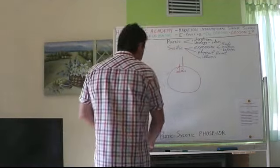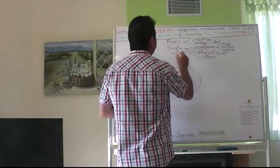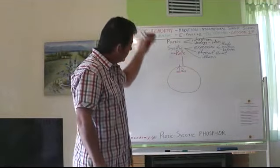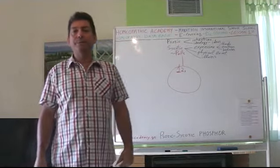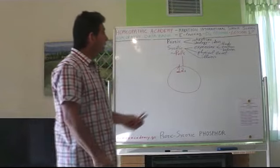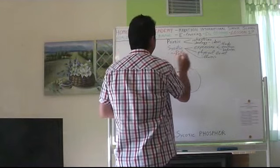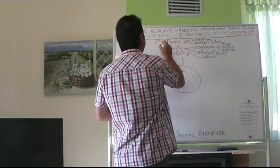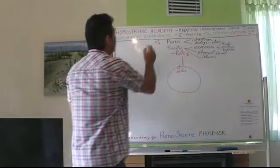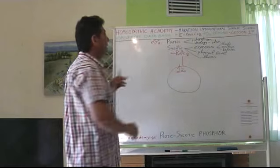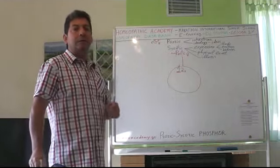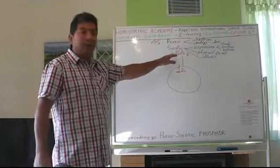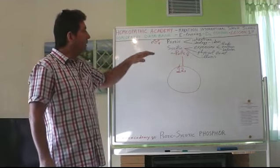Pulsatilla is also psoric in intention, ideology, and ideas, and psychotic in expression and physical level. Pulsatilla is mostly female — 95% may be female — and you will see that Pulsatilla suits the female characteristics more than Phosphor. It is a more female nature as to the symptoms and characteristics, while Phosphor is more closer to the male.